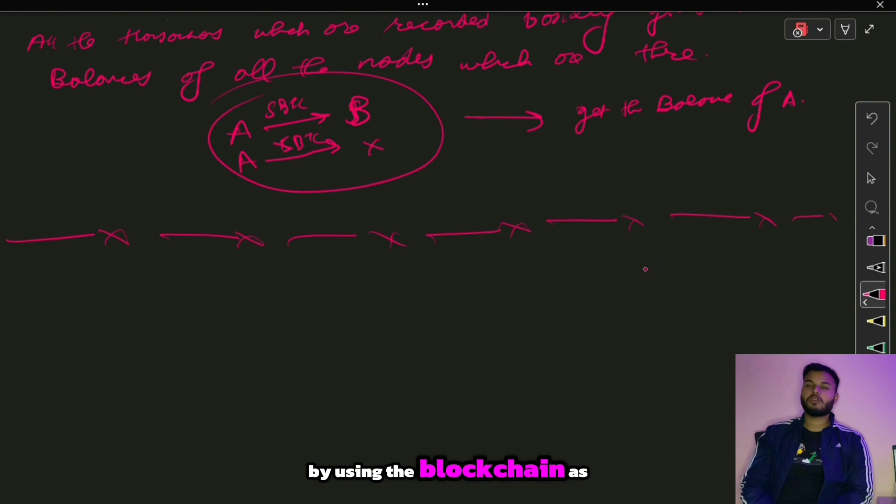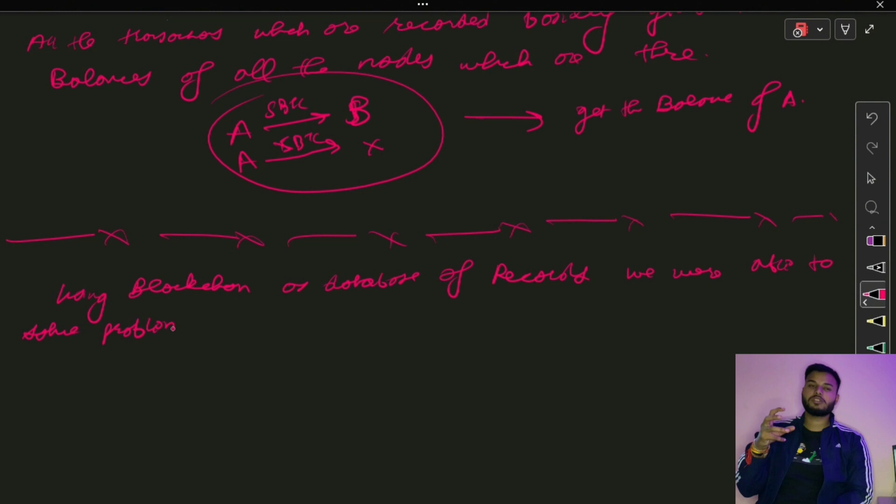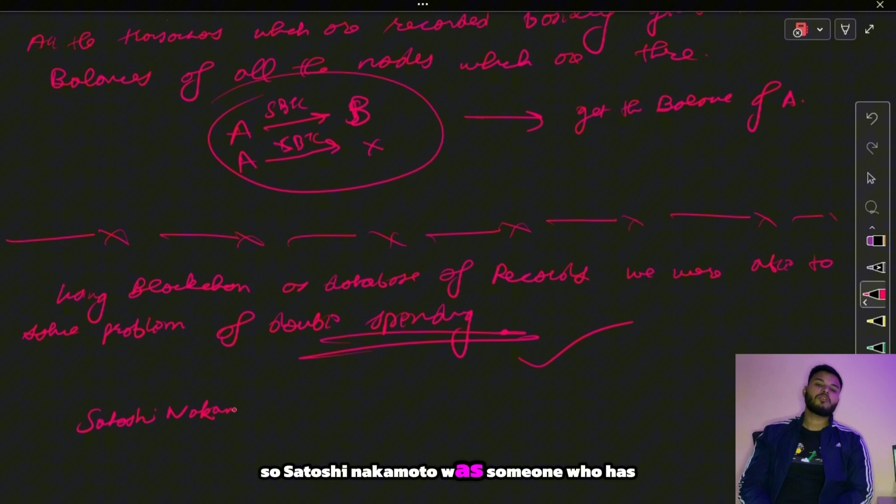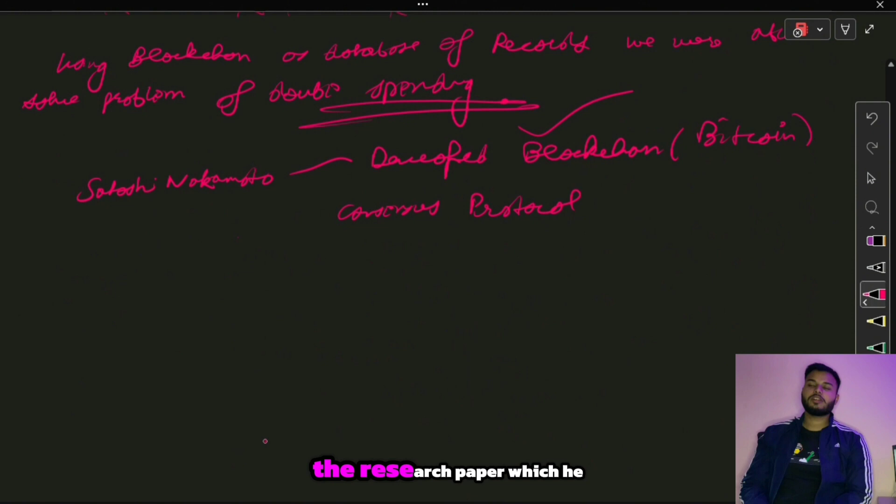Satoshi Nakamoto developed this blockchain system. In the paper he published, he described the consensus protocol used for Bitcoin, which is called Proof of Work. What Bitcoin is and how it works we will study in our next video. Thank you.